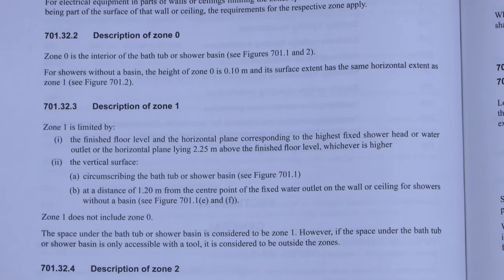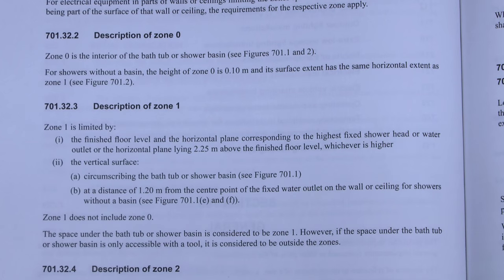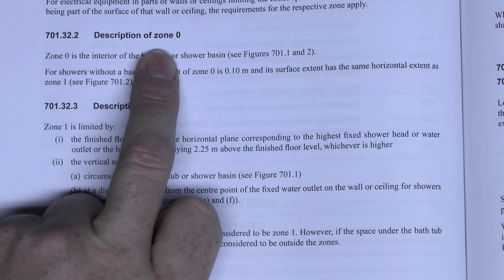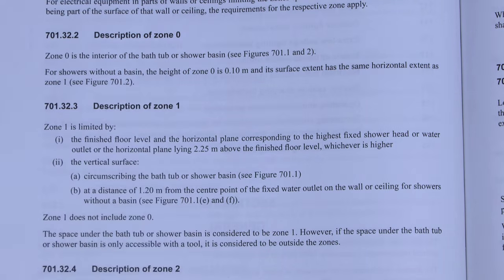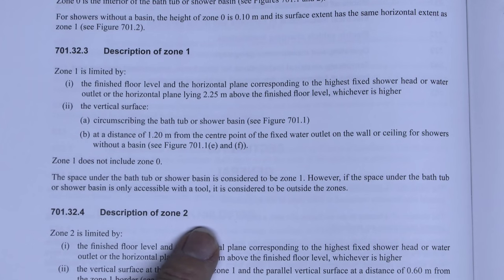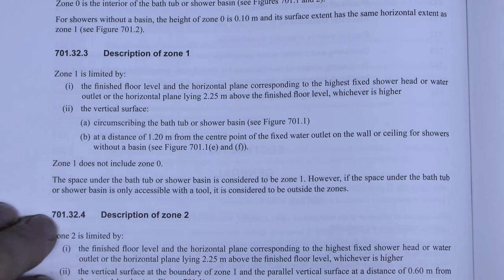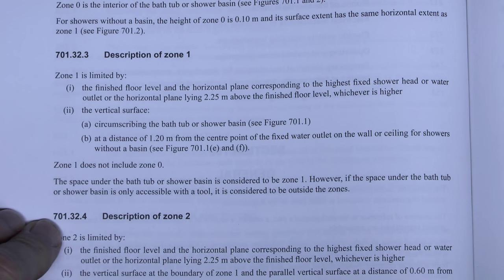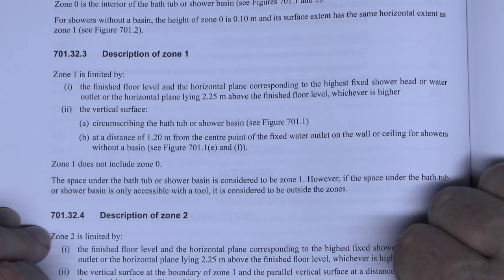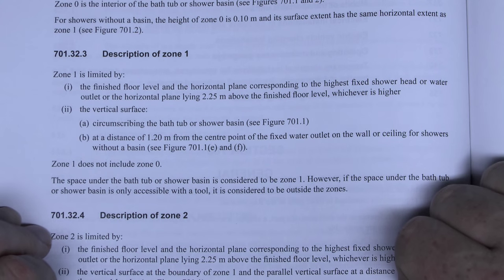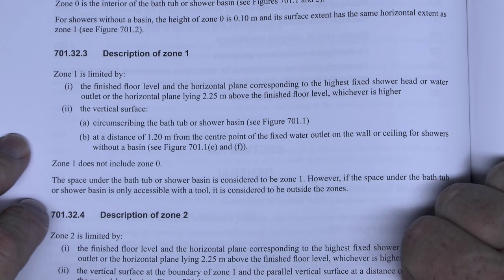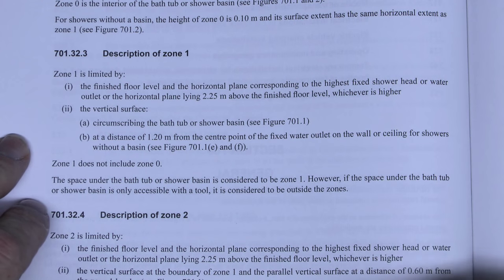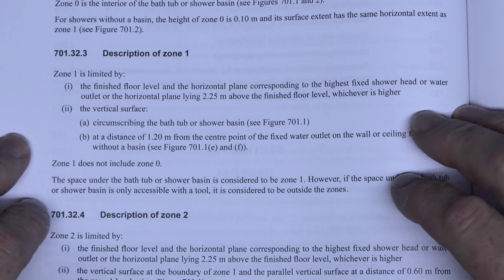There are several zones defined here: zone 0, zone 1, and zone 2. There was previously a zone 3, but that's been deleted so it's no longer applicable, although information about it is still out there. Anything that refers to zone 3 is now out of date and should not be used.